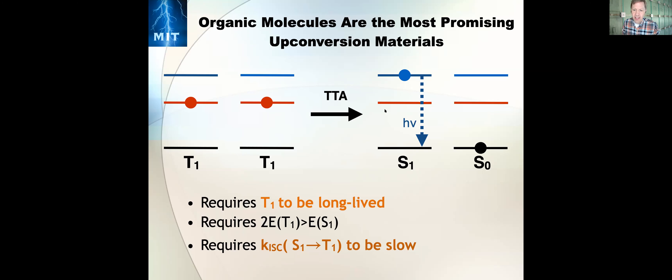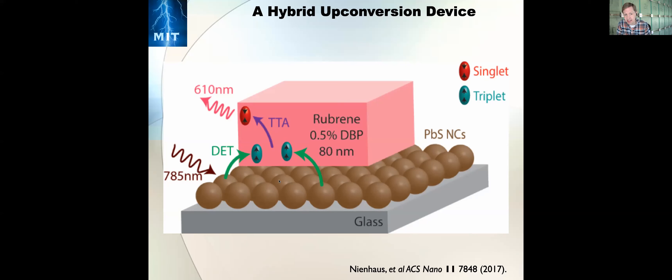Molecules that don't satisfy this condition are interesting for singlet fission, but everything that's not a good singlet fission molecule is potentially a good triplet-triplet annihilation candidate. Finally, this singlet excited state will only emit if S1-to-T1 intersystem crossing is slow — and again, organic molecules typically have quite slow intersystem crossing because spin-orbit coupling is weak. This is essentially a no-contest: organic materials are better than inorganic materials at this up-conversion process.